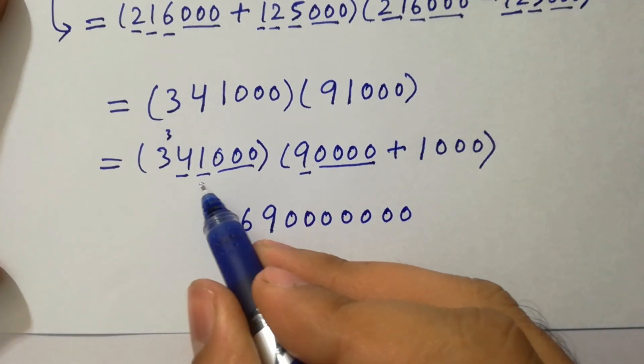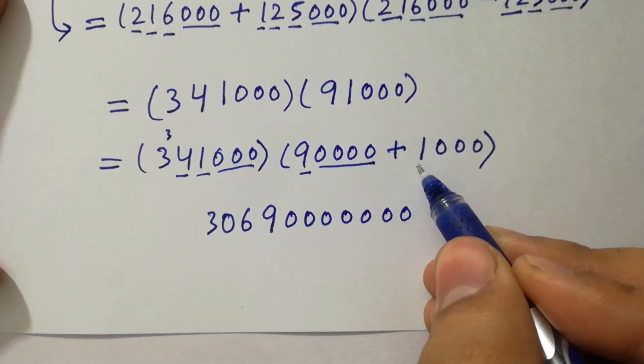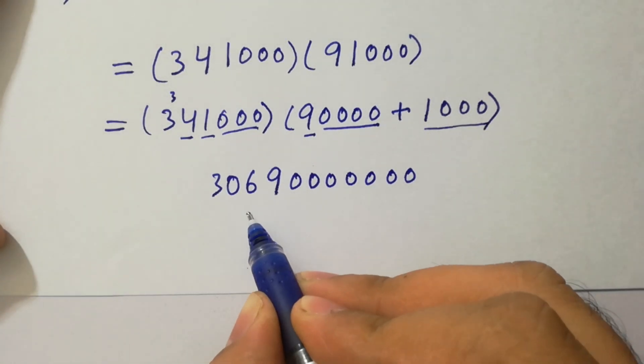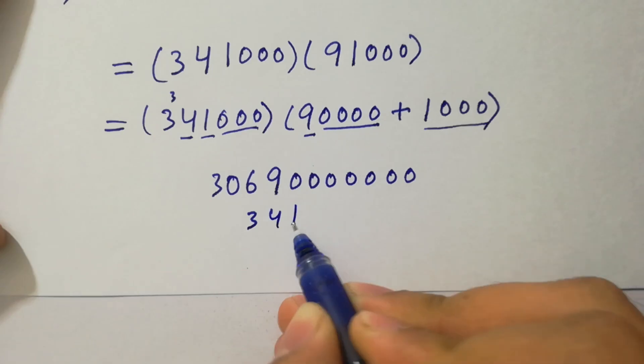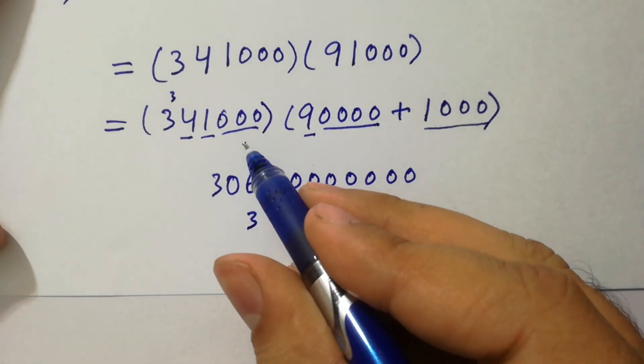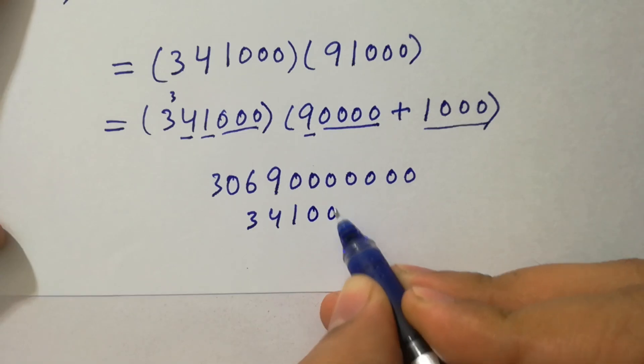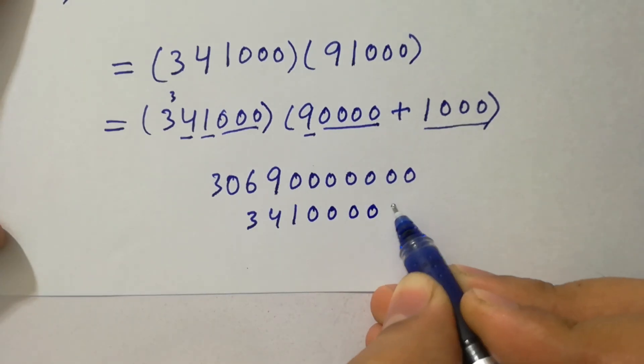Next, we have here 341,000 times 1,000. We have here 3, 4, 1. 3 times 0, 3 times 0, we have 6 times 0s: 1, 2, 3, 4, 5, 6.